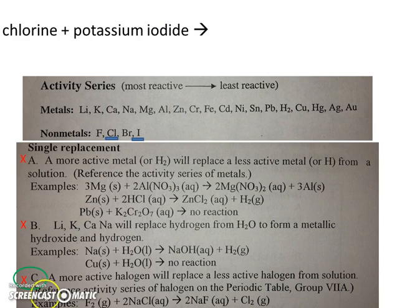So let's read this one more time. A more active halogen will replace a what? A less active halogen. From where? From solution. So chlorine is going to replace iodine.